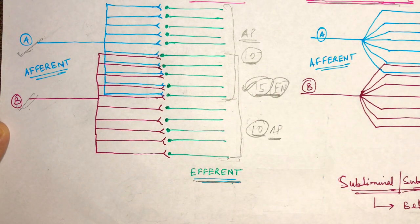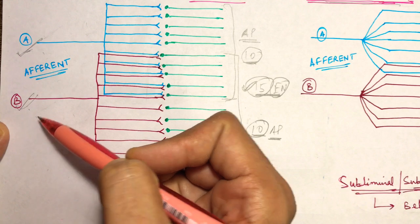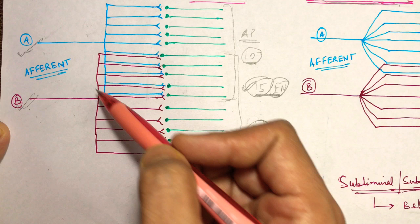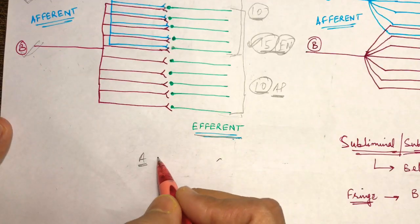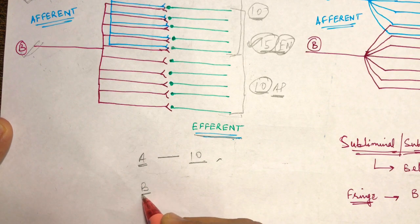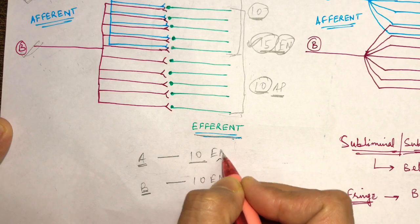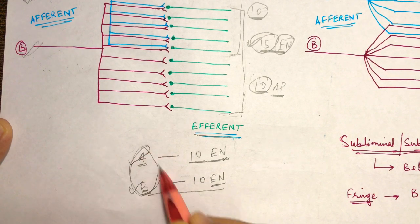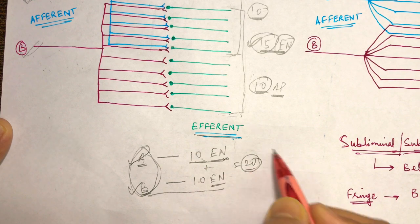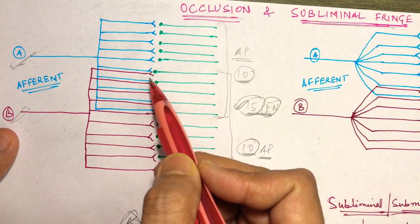So we can say occlusion means a situation in which the response to stimulation of two pre-synaptic neurons collectively or simultaneously is less than the sum total of the response obtained when they are stimulated individually. When A is stimulated individually, 10 efferent neurons are stimulated; when B is stimulated individually, 10 efferent neurons are stimulated. Mathematically, 10 plus 10 should be 20, but only 15 are getting stimulated — that is called occlusion.